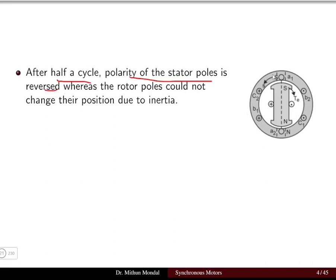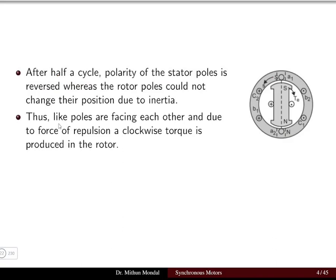The rotor has the tendency to rotate in the anti-clockwise direction because of the force of attraction between the opposite poles. However, after half a cycle the polarity of the stator pole is reversed — the north pole becomes the south pole and the south pole becomes the north pole. But the rotor poles could not reverse due to the inertia of the rotor, because the rotor is heavy.